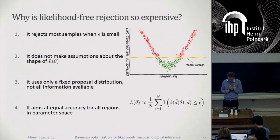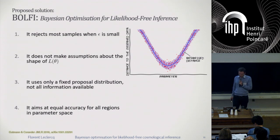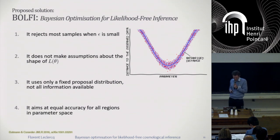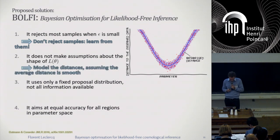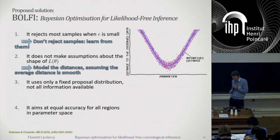The proposed solution to go beyond likelihood-free rejection sampling is to replace this effective likelihood approximation. This solution has been developed in the machine learning literature over the last few years. It's an algorithm known as BOLFI — Bayesian Optimization for Likelihood-Free Inference — and it addresses the four issues I just mentioned. With BOLFI: we don't reject any sample but learn from all of them; we model the distance assuming the average distance is smooth; we use Bayes' theorem to update the proposal of new points based not only on the prior but also on simulations already run; and we prioritize regions in parameter space where we already know the distance to observed data is small.